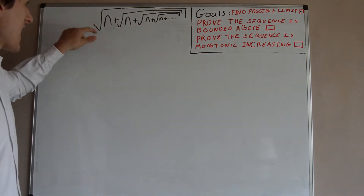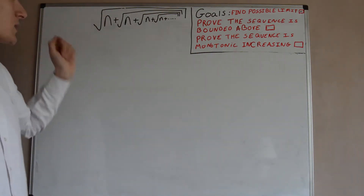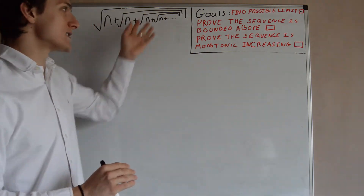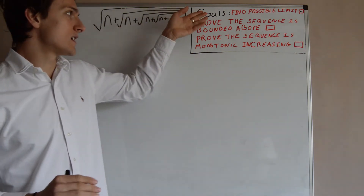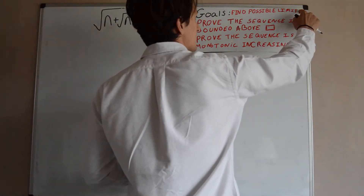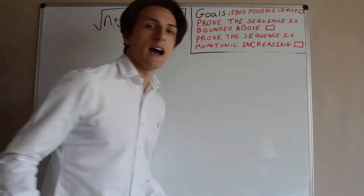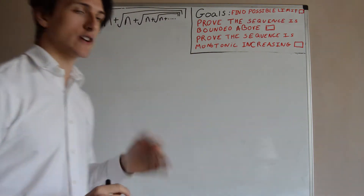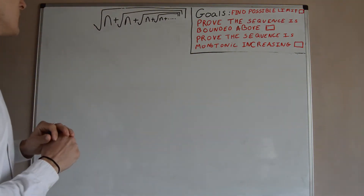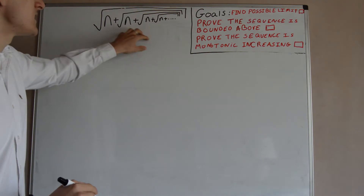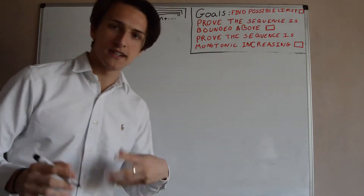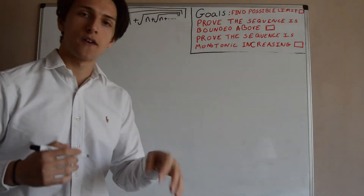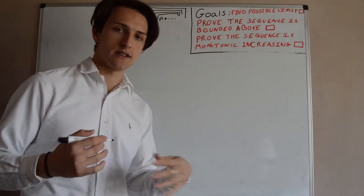Today we're going to be looking at the square root of n plus the square root of n plus dot dot dot. And we're going to prove that this limit exists, as well as finding the limit. We're going to do this using real analysis, using the power of rigour.